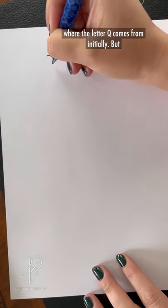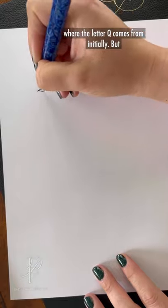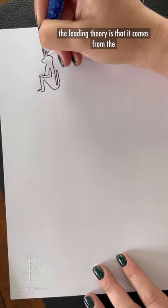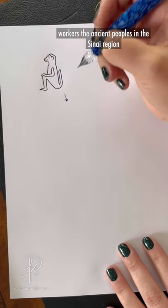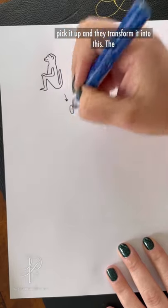We're not entirely sure where the letter Q comes from initially, but the leading theory is that it comes from the hieroglyph for monkey. Through trade and migrant workers, the ancient peoples in the Sinai region pick it up and they transform it into this.